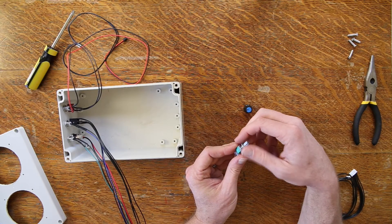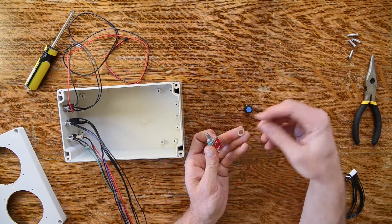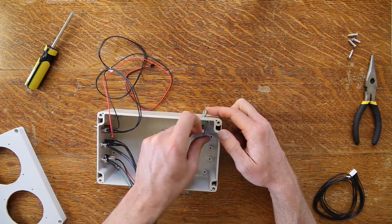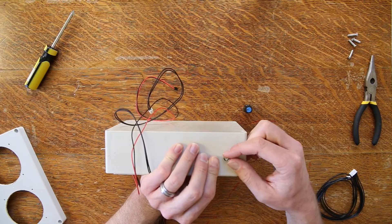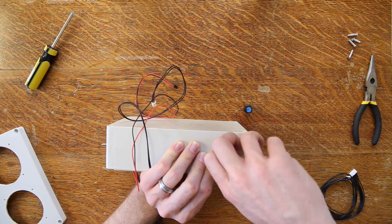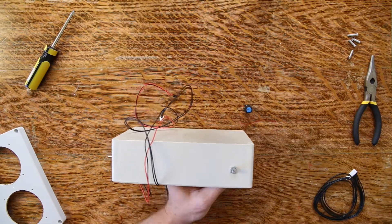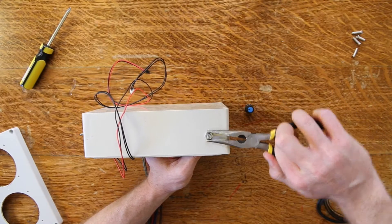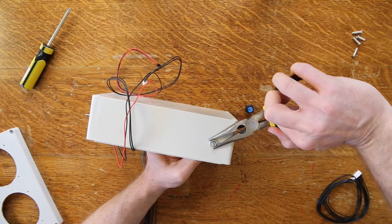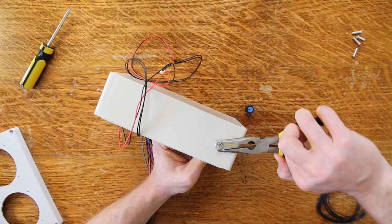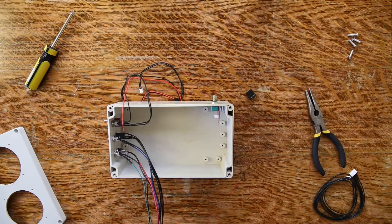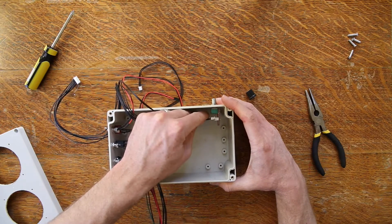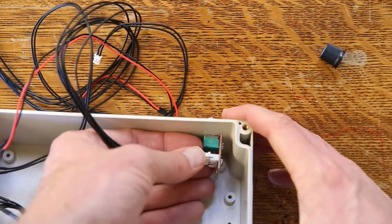Our last one is the volume control. So again, remove the washer and the nut, and we are going to throw the washer away for this one. Push it through and replace the nut, with your fingers at first, and then you'll need to use the pliers. Make sure the volume control is oriented that way, and then you can place the six pin connector into the volume control connector.